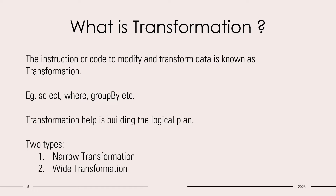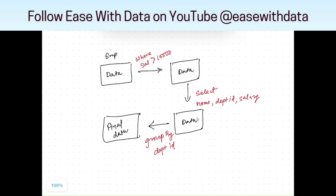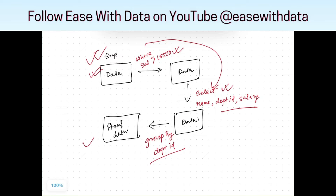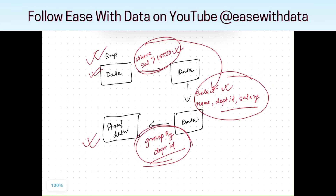There are basically two types of transformations: narrow and wide. Consider this example — we have an employee dataset where we have to do certain transformations: first, select only those employees who have a salary greater than 10,000; then select only the name, department ID, and salary from the dataset; and third, do a group by on the employee data based on the department ID. This whole workflow is a logical plan that starts from the employee dataset and ends at the final grouped output. So where, select, and group by are all transformations.